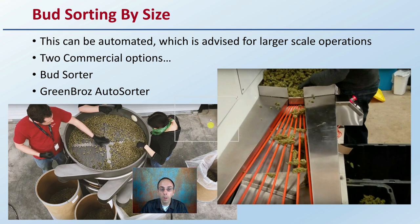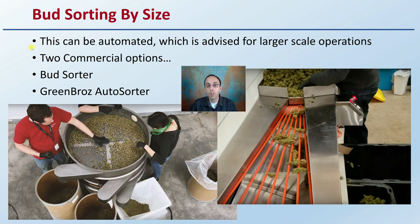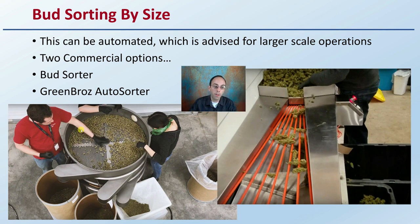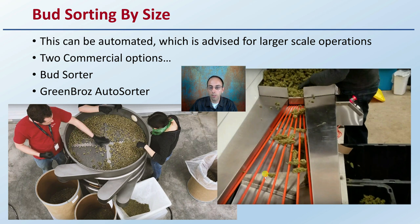When sorting buds by their size, this can be automated, which is advised for larger scale operations. There are two main commercial options, and both serve the same purpose: to take a collection of plant material and sort them into different containers or categories. One does it with different hole sizes — smaller buds fall through earlier and are sorted there, while larger buds make it further down and are sorted separately. This automation is a great way to speed up the process.